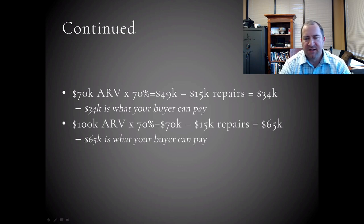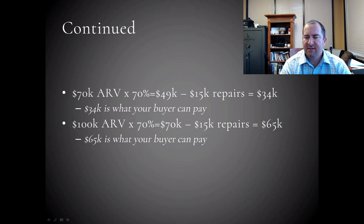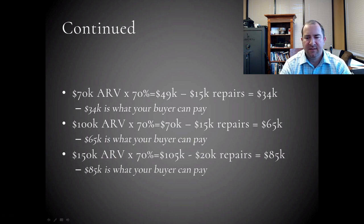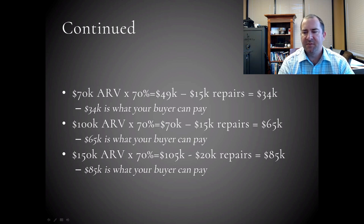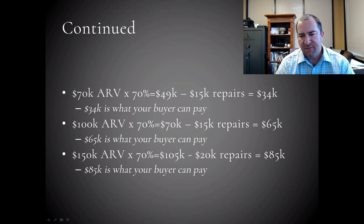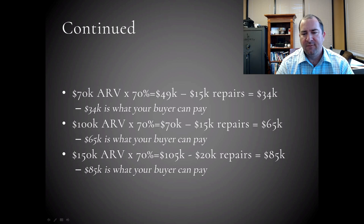For a $100,000 property, same formula: $100,000 minus 70%, factor out $15,000 in renovations, leaves you with $65,000 — that's where your cash buyer can buy this property from you, so you need to get it a little less. For a $150,000 property, 70% of that is $105,000. Subtract out $20,000 in repairs and you're left with $85,000, which is what your buyer can pay in theory.